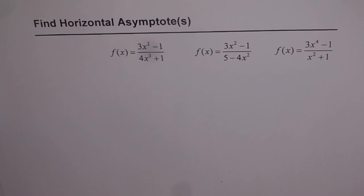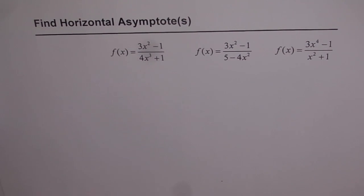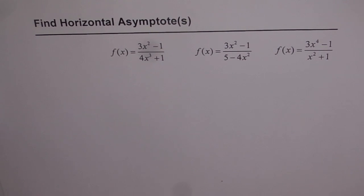Find horizontal asymptotes. We are given three rational functions, and we need to find the equation of horizontal asymptotes for these three functions. The method I'm going to discuss today will actually help you find the equation for horizontal asymptotes for any equation in general. That's the beauty of this method.